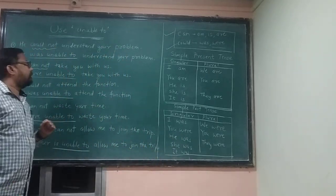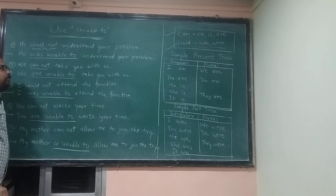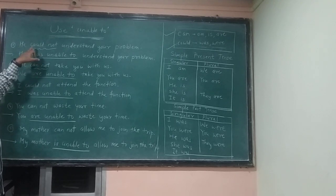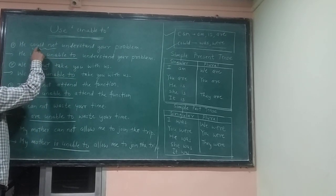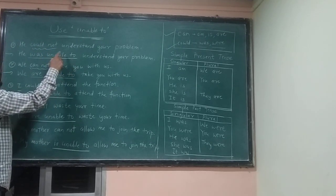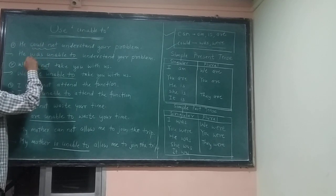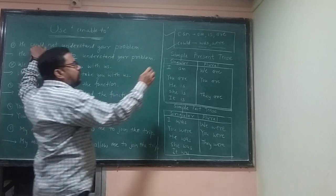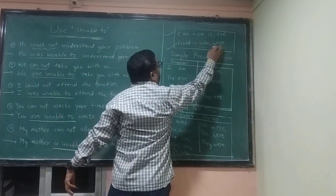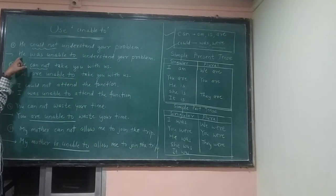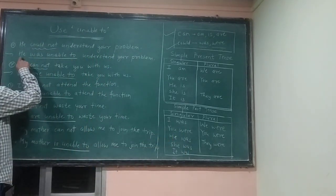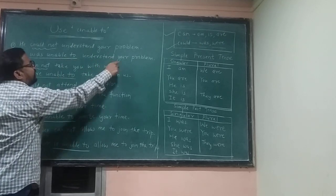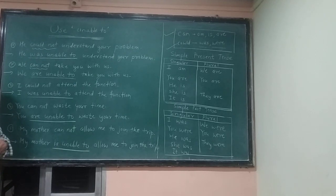Let's see the first sentence: 'He could not understand your problem.' We have to remove 'could not.' Because there is 'could,' we have to use 'was' or 'were.' The subject is 'he,' so we use 'was.' The sentence becomes: 'He was unable to understand your problem.'